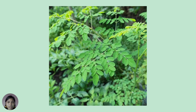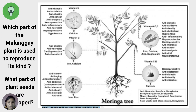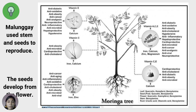Look at the picture on our screen. Do you know the name of that plant? That is a malunggay, or moringa tree. Malunggay or horseradish is a common plant found anywhere in the community and has a lot of health benefits. Its parts are used for medicinal purposes. The correct answers: malunggay uses stem and seeds to reproduce, and the seeds develop from the flower.